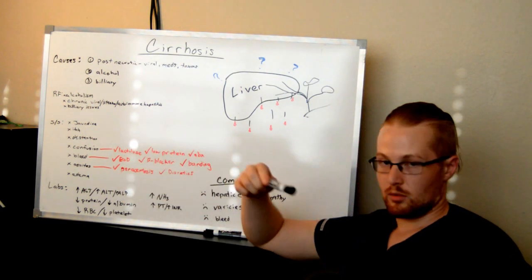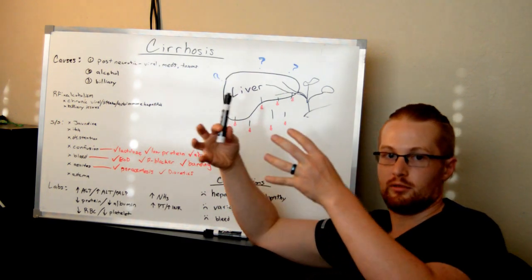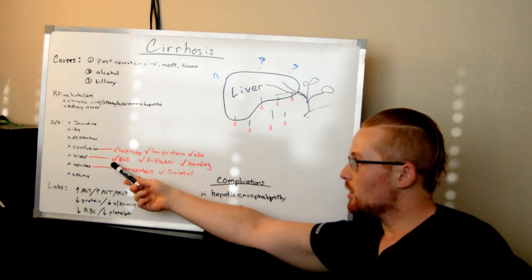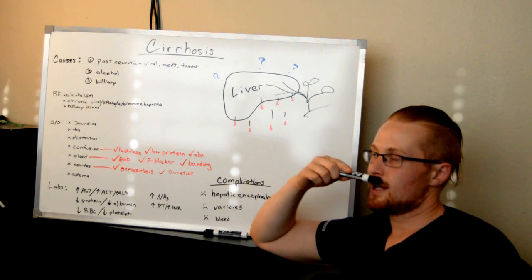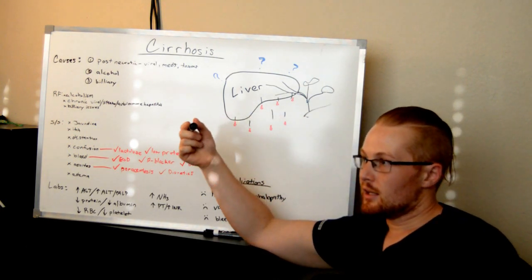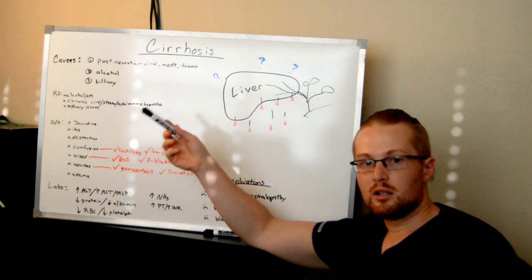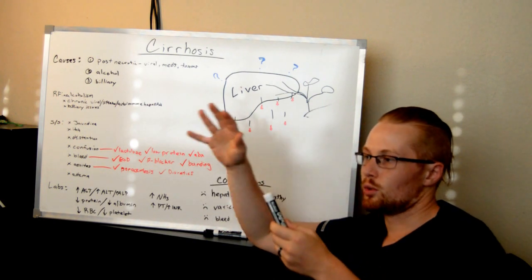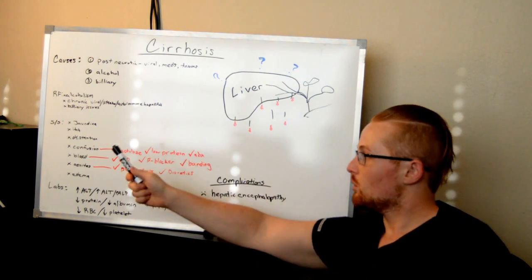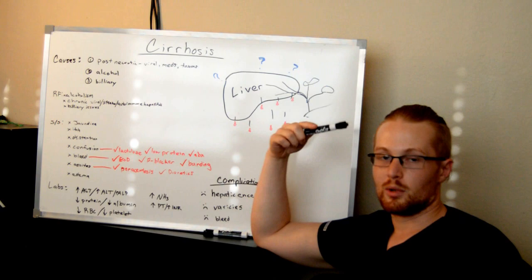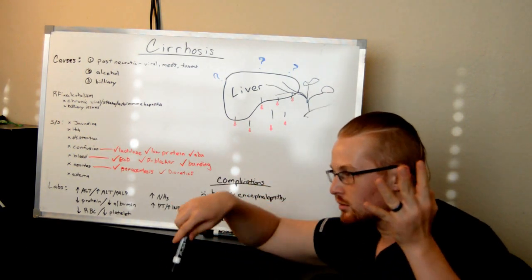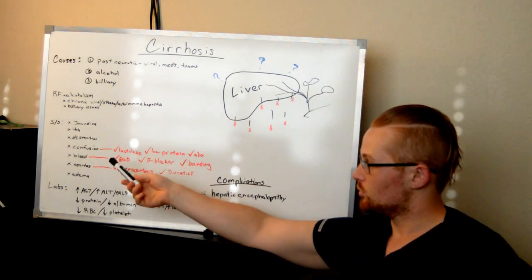There's going to be some distention around the abdomen because the liver is going to be inflamed and swollen. You can also see confusion, and this has to do with it's supposed to help break down ammonia so that your body gets rid of it. It's unable to do that, and ammonia makes its way to the brain through the bloodstream. High levels can cause confusion.